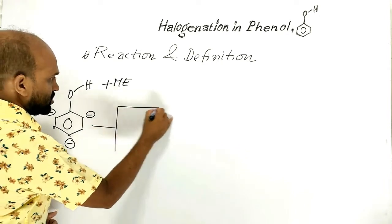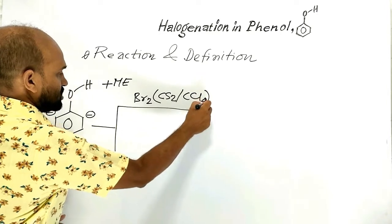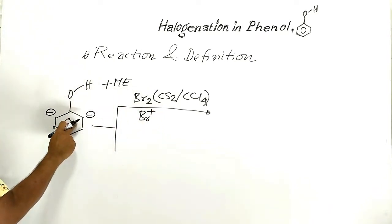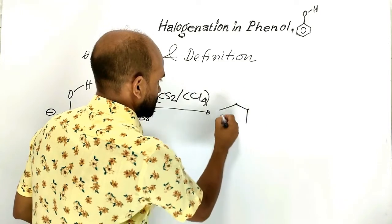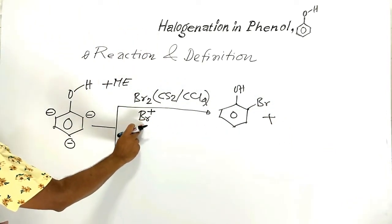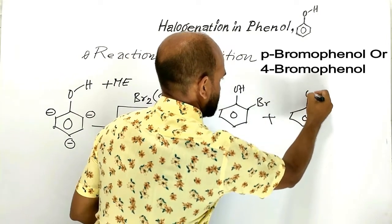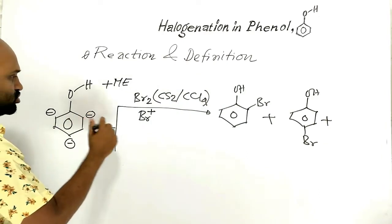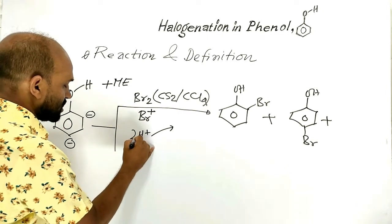When phenol is treated with bromine solution in carbon disulfide or carbon tetrachloride, the bromine molecule produces a bromine cation by interacting with phenol. This bromine cation attacks the para position of a phenol molecule to form para-bromophenol. Another bromine cation attacks the ortho position, and from those positions, hydrogen atoms go out as protons.